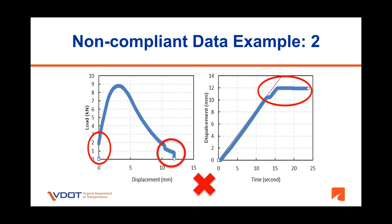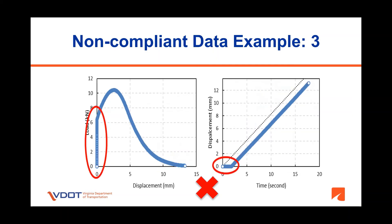Another example of non-compliant data. In this case, a seating load was applied at the beginning of the test and there is an LVDT error towards the end of the test. The test software should be configured to remove the seating load, and the LVDT installation and range should be checked. In these figures, it seems that the loading RAM and LVDT are not synchronized, therefore resulting in non-compliant data and inaccurate CT index values.